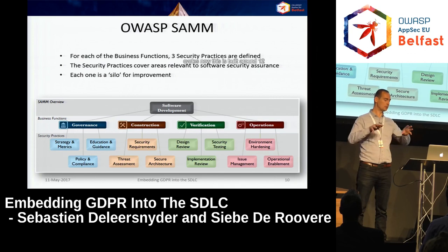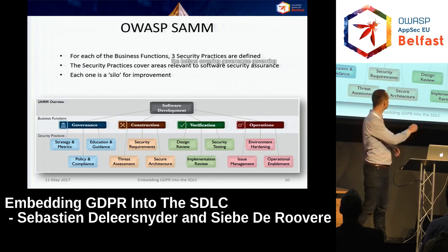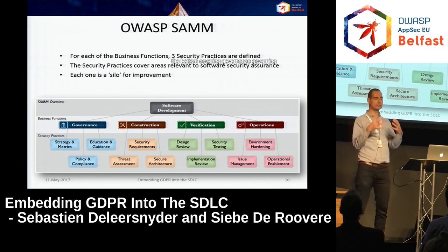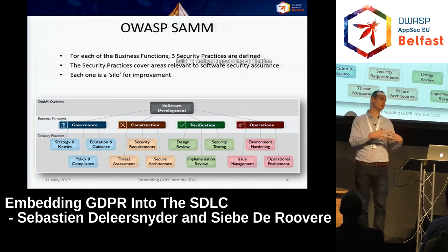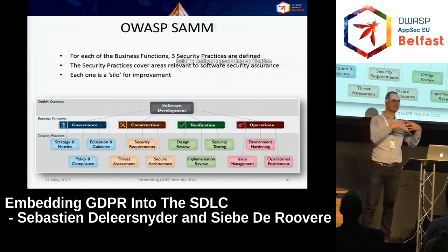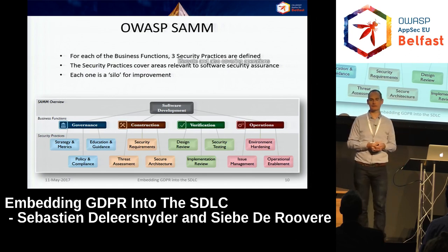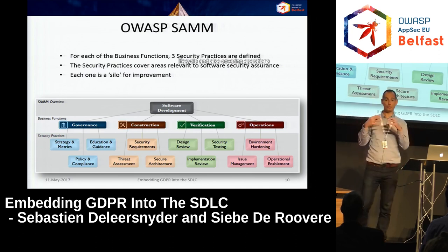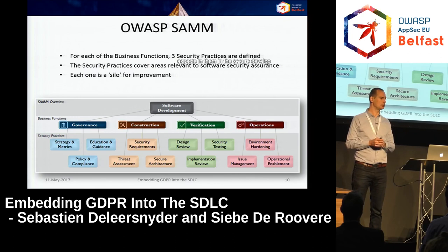SAMM is built around 12 security practices covering governance, the building of software, verification activities in the secure development lifecycle, and also operational aspects. These practices span the full software lifecycle from governance through construction and verification to operations.